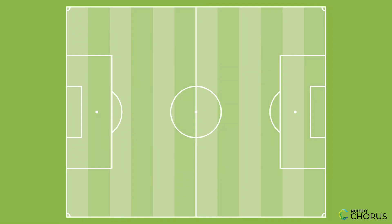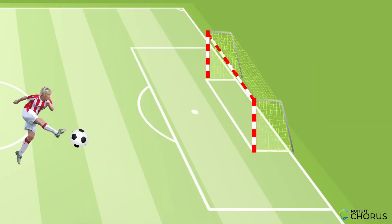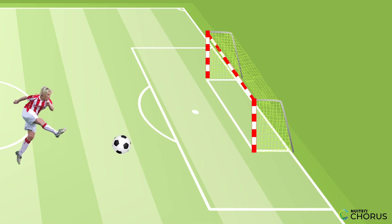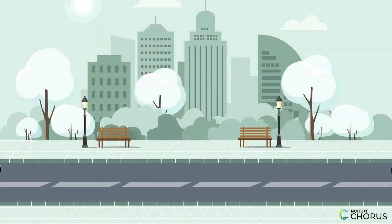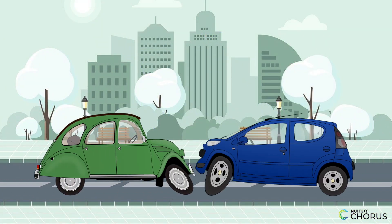Now let's go to a soccer field. You kick a soccer ball and it bounces off the goalpost — that's an elastic collision. The ball bounces back, showing us that action-reaction force.